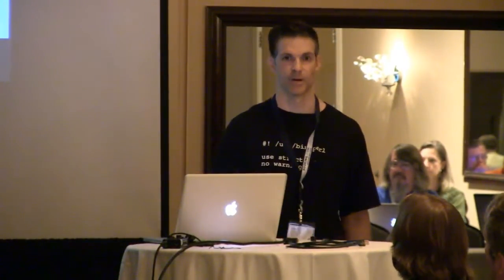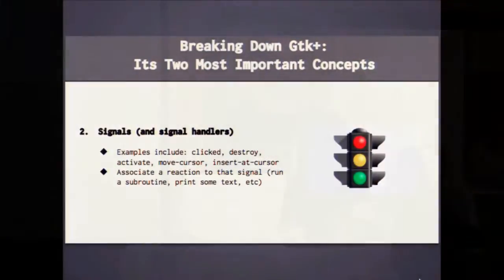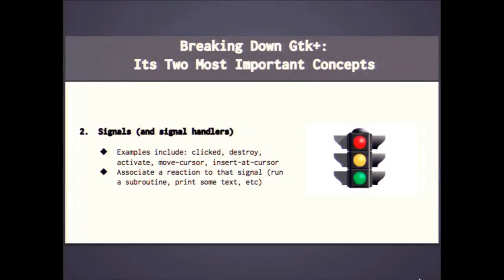The second most important thing is signals and signal handling. This is what happens when a user clicks on a button, or they use drag and drop - what should happen? What kind of signals get emitted, and what do you want to happen when the user clicks on a particular box? That's it. Those are the two most complicated aspects you have to think about.